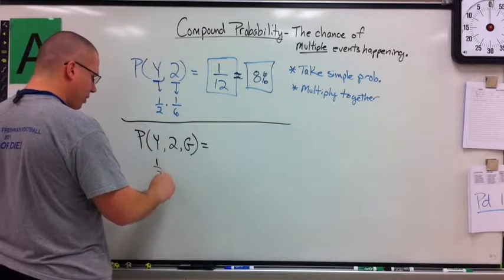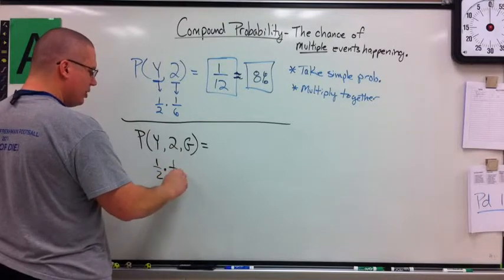Underneath, I'm going to write my individual probabilities. I'm going to multiply them together and get my winnings. Chance of a yellow, one half. Chance of a two, one out of six.